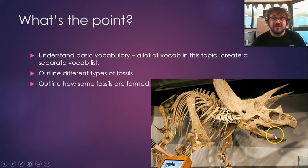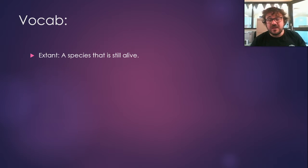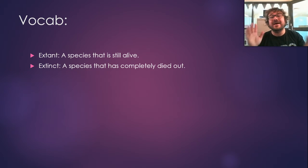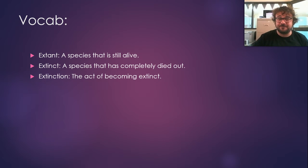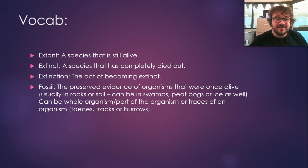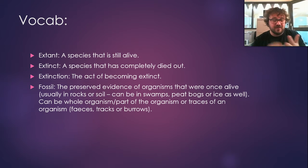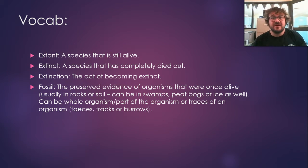This is Triceratops — one of my favourites. So, vocab: you want to know what 'extant' means. Extant is a species that is still alive — you are a Homo sapiens sapiens, and Homo sapiens sapiens are still alive. 'Extinct' is a species that has completely died out — for example, our cousins Homo sapiens neanderthalensis, completely dead; we probably murdered them. 'Extinction' is the act of becoming extinct. And a 'fossil' is the preserved evidence of an organism — something left over that shows us that something was alive there. It can be part of an organism, rocks, footprints, holes in the ground — a trace of an organism that was once there.